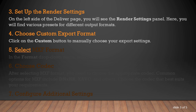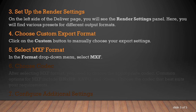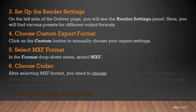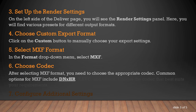Step 5: Select MXF Format. In the Format drop-down menu, select MXF. Step 6: Choose Codec. After selecting MXF format, you need to choose the appropriate codec. Common options for MXF include DNXHR, XAVC, and others. Choose the codec that best suits your requirements.